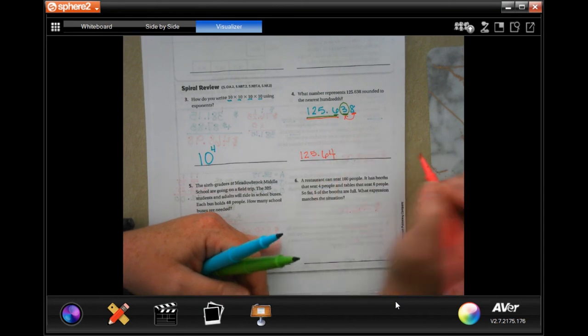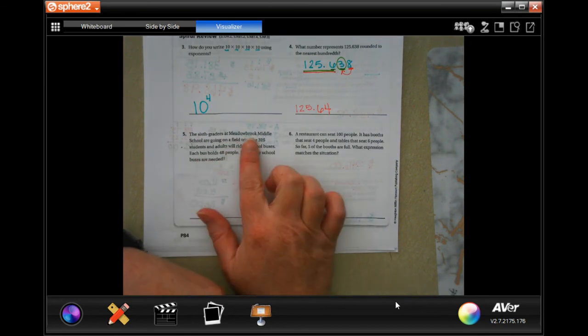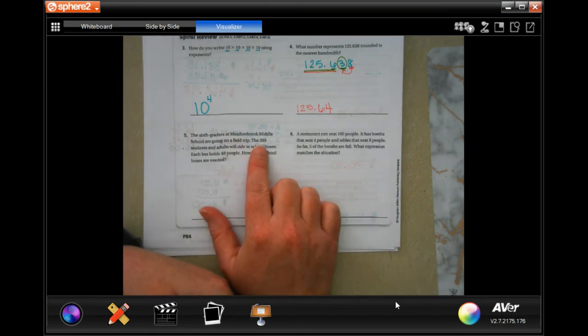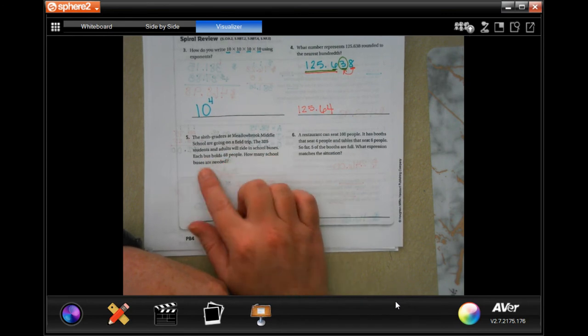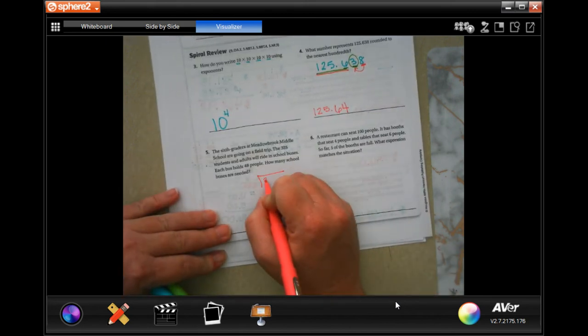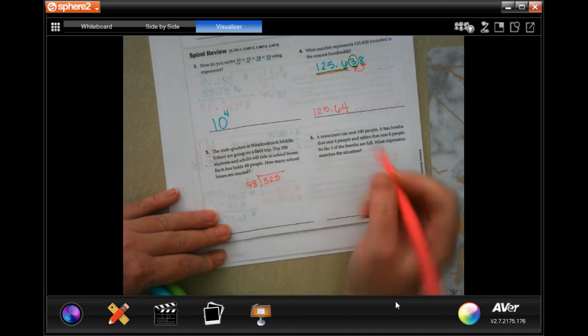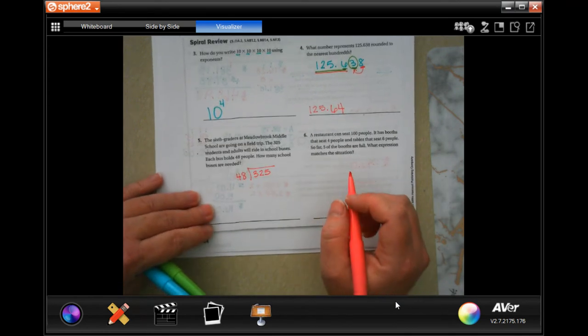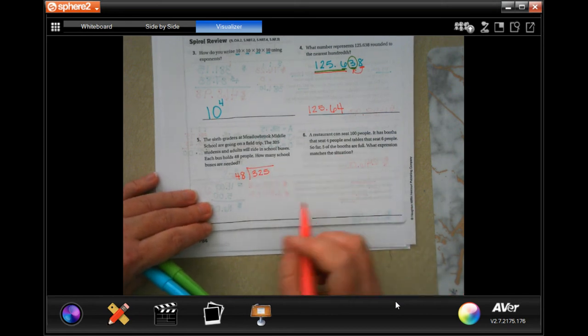So now it says the sixth graders at Meadowbrook Middle School are going on a field trip. The 325 students and adults will ride in school buses. Each bus holds 48 people. How many buses are needed? So there are 325 people and 48 people per bus, so now we need to find out how many buses we need to take.